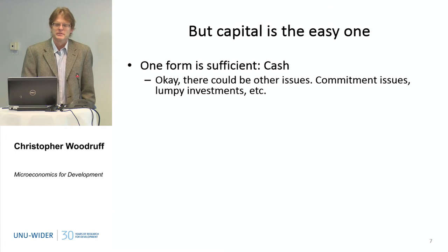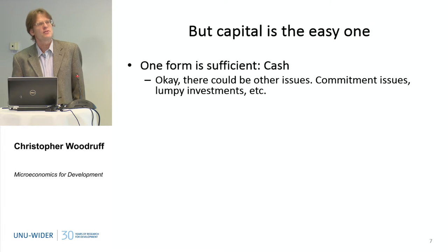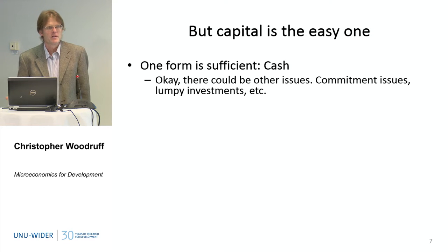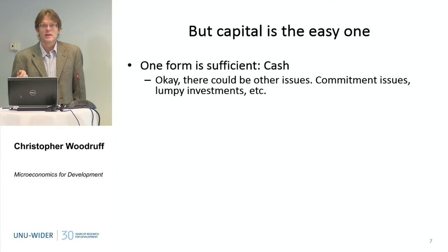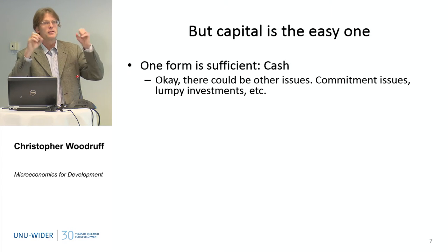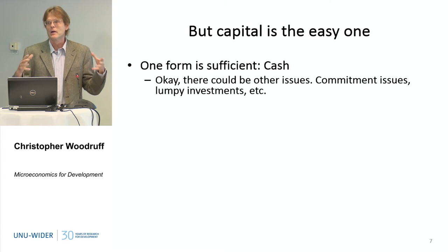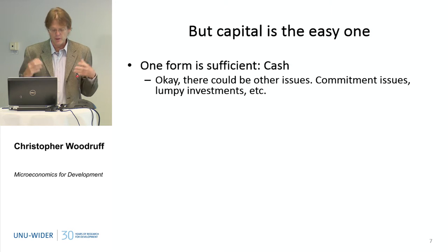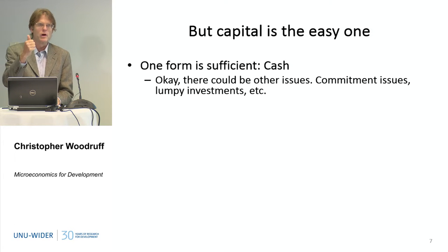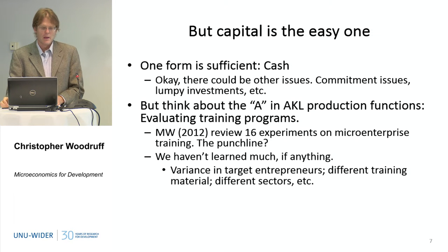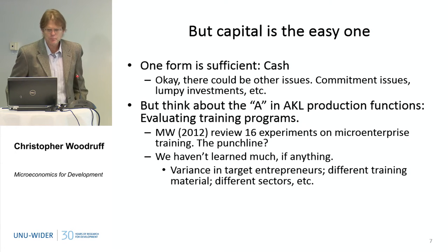Capital is the easy constraint to study. If I believe that the only constraint to an enterprise is capital, there's only one form of capital that matters — I just give them cash, or ask what they want to buy and buy it for them. If I believe that's the only constraint, there's just one thing to design the intervention around. We still talk about external validity and can do this in different places with different samples — it's a potentially solvable problem. The dimensionality is not too big because there's only one relevant intervention.